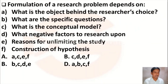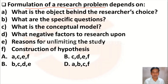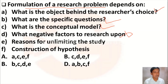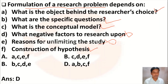The next question is: formulation of a research problem depends on — Option A: what is the objective behind the researcher's choice, Option B: what are the specific questions, Option C: what is the conceptual model, Option D: negative factors to research upon. Options A, B, and C are correct. Negative factors will not be considered in research problem formulation. Construction of hypothesis is also included, so the correct answer is A, B, C, and F.